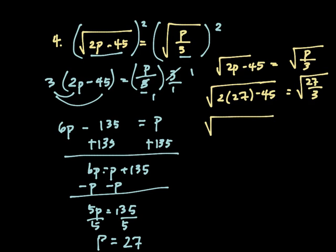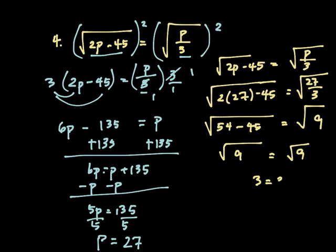So I have 2 times 27, which is 54 minus 45, equals square root of 27 divided by 3 is 9. That's 9. So square root of 9, or 3, does equal 3.